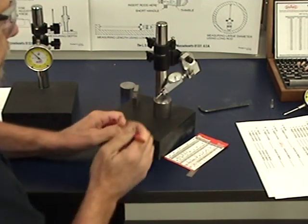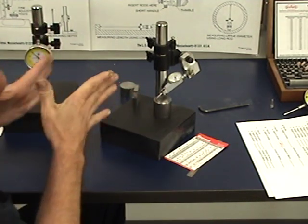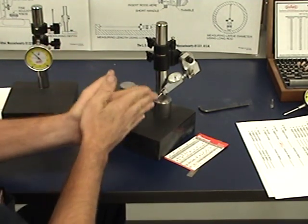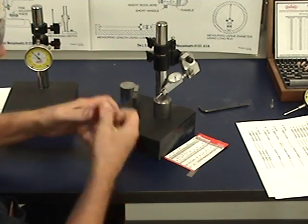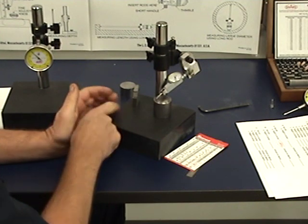So be very, very, very careful. And they do read in half thousands. So what we're doing, we're taking a standard, comparing it to our work piece, finding the difference and adding that difference or subtracting that difference to our gauge blocks.